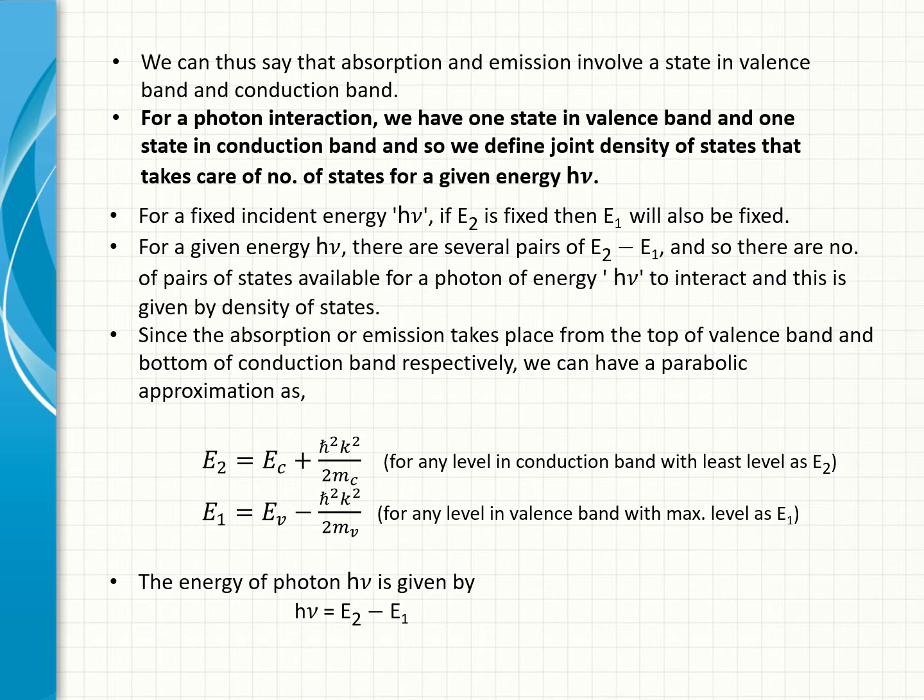Since the absorption or emission takes place from the top of valence band and bottom of conduction band respectively, we can have a parabolic approximation as E2 = Ec + (ℏ²k²)/(2mc) for any level in conduction band with least level as E2. E1 = Ev - (ℏ²k²)/(2mv) for any level in valence band with maximum level as E1. The energy of photon hν is given by hν = E2 - E1.